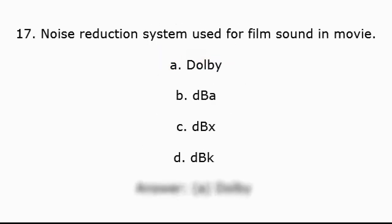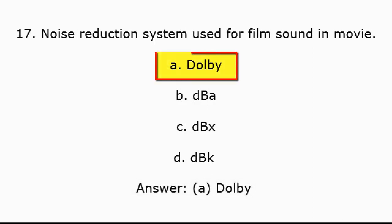Question 17: Noise reduction system used for film sound in movies. A. Dolby, B. DBX, C. DBX, D. DBK. Answer: A. Dolby.